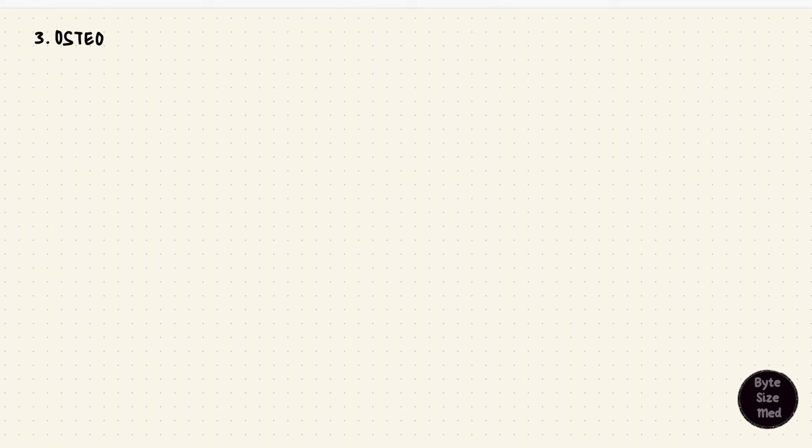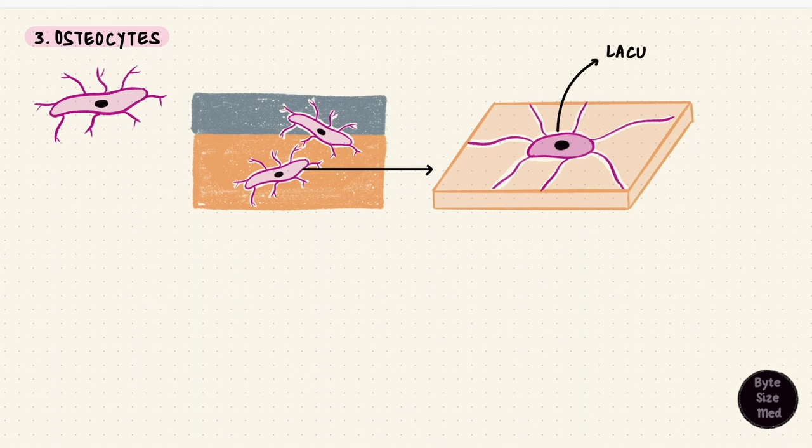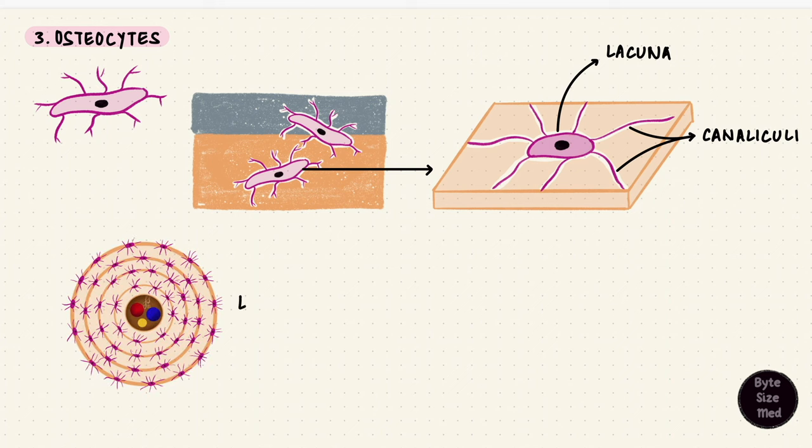So osteocytes are more mature cells and they're not very active. They have lesser rough endoplasmic reticulum and golgi apparatus. They sit inside lacunae which are spaces in the bone matrix that houses these cells. They have cytoplasmic extensions that are in the spaces called canaliculi. Mature bone is lamellated. It's got layers and layers of matrix and these cells sit in those lacunae trapped between the layers with those cytoplasmic processes inside canaliculi.